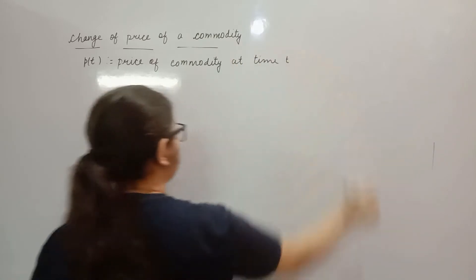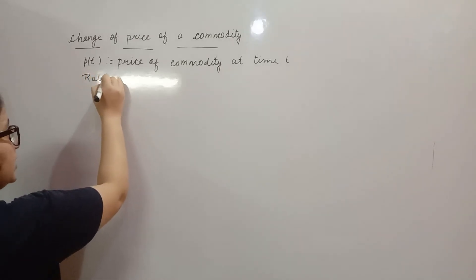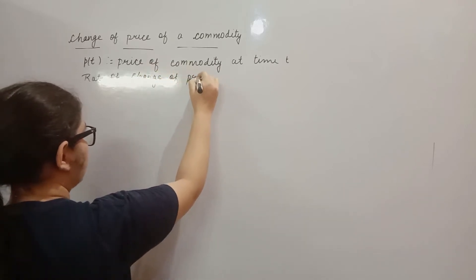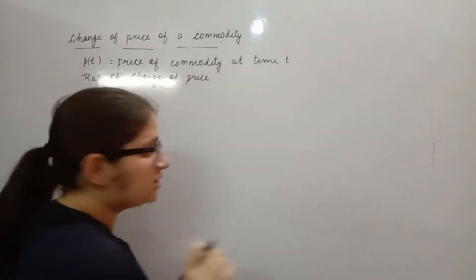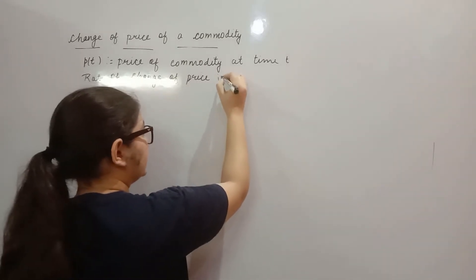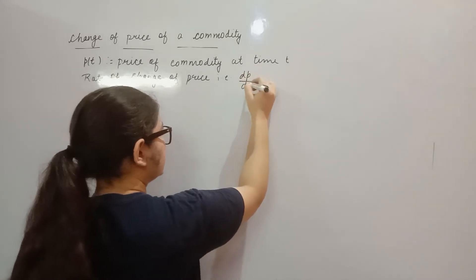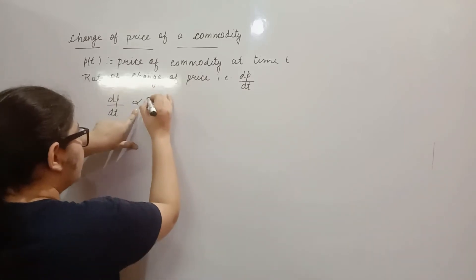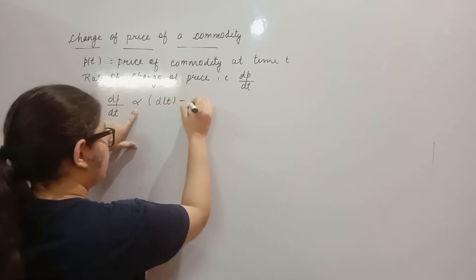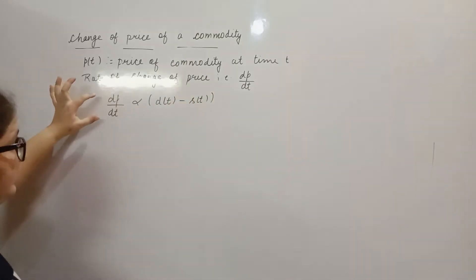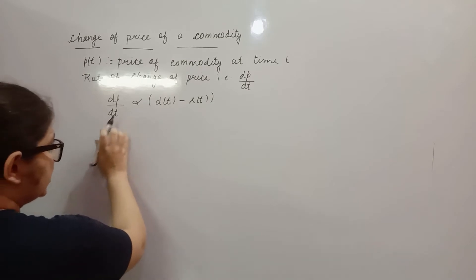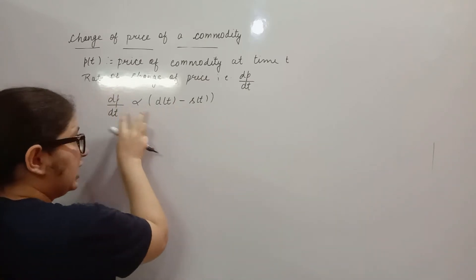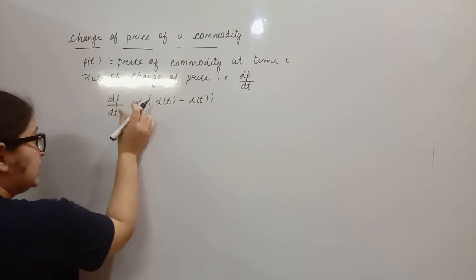P(t) is the price of commodity at time t. The rate of change of price with respect to time, that is dP/dt, is proportional to demand minus supply. So dP/dt is proportional to the difference between the demand and supply.